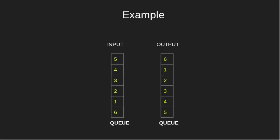For example, if the input queue has elements in order 6, 1, 2, 3, 4, 5, then we obtain a queue having elements in order 5, 4, 3, 2, 1, 6.